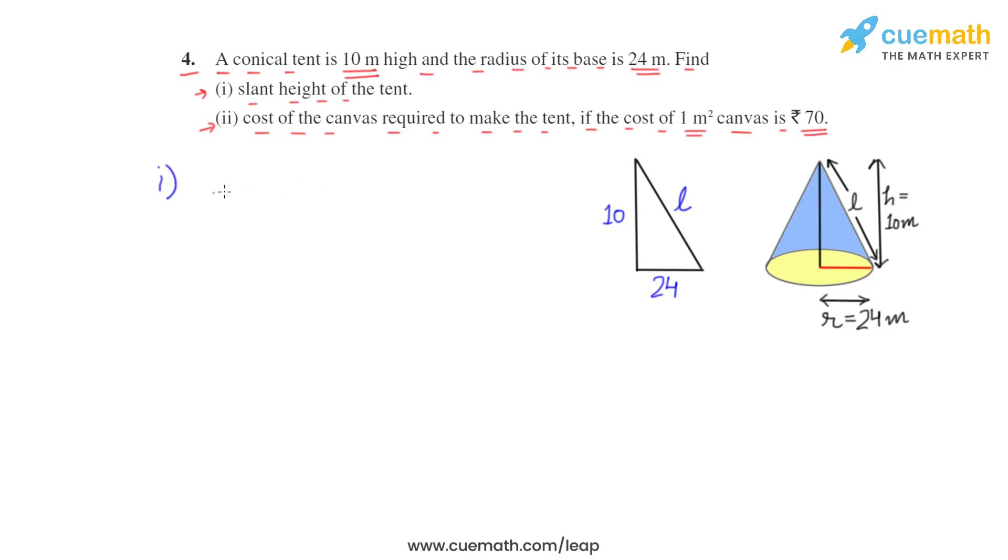So in the first part we have to find the slant height so we can use the Pythagorean theorem. We know that hypotenuse square, that is l square, is equal to the sum of square of the other two legs of the triangle. It means l square is equal to r square plus h square, where r is the radius of base, h is the height, and l is the slant height.